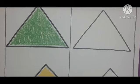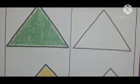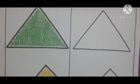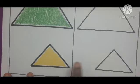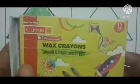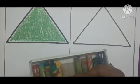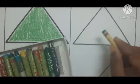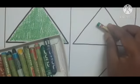Green, yellow. You have to color here also. For big triangle, you have to color which color? Green. For small triangle, it is yellow. Always when you have to color, you have to take the crayons. What is the big triangle color? Green color. Green color for big triangle. For green is the big triangle.